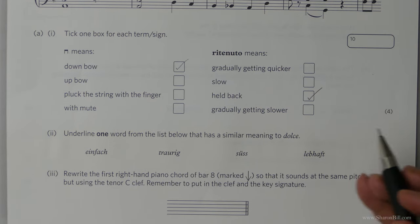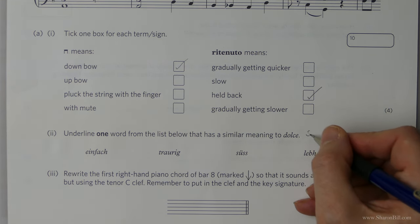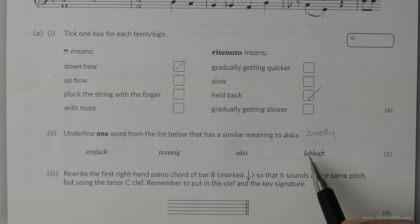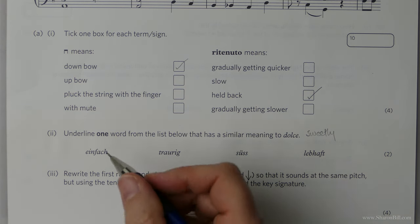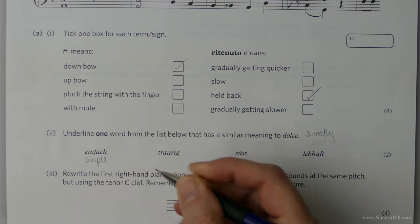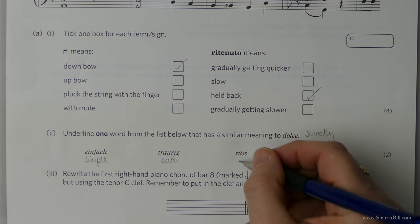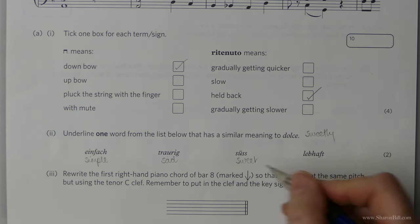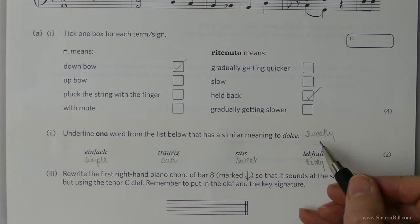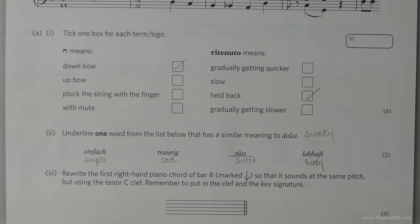So now then, we have this word dolce and we need to choose a word that is similar to that meaning. So dolce itself means sweetly. And before we go ahead and answer this question, let's give all of these definitions. Let's make best use of this as a revision aid. So Einfach, excuse my pronunciation, I do not speak German at all. This means sad. And süss means sweet. So there we have our answer. And lebhaft is lively, not appropriate in this instance. So sweet, and so you would underline sweet.